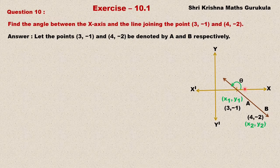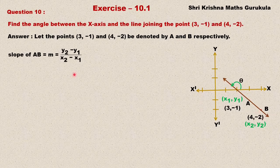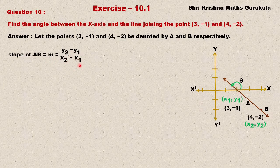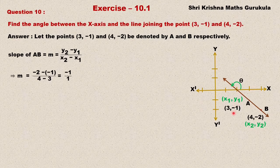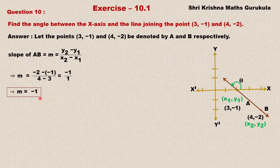This sum can be solved in two different ways. We are going to solve first using the concept of slope. Let us find the slope of line segment AB. When we know two points on a line we use the formula m = (y2 - y1) / (x2 - x1). Substituting: the numerator is -2 - (-1) = -1, and the denominator is 4 - 3 = 1. So the slope is -1.